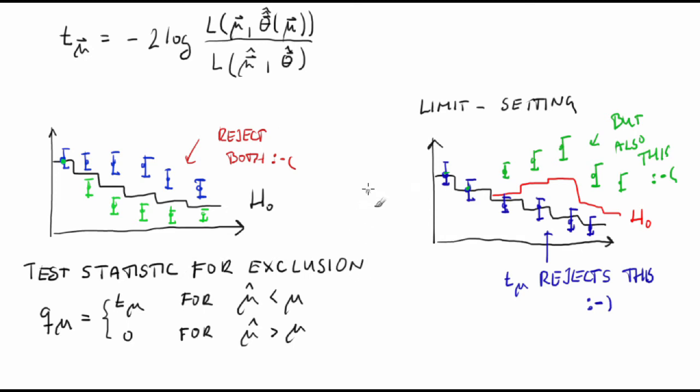Thanks to Mr. Wilkes and his theorem, we know the distribution of this test statistic in the large sample limit. Large sample means that there are at least about 5 events in each bin of our histogram. Now the distribution. F of Q sub mu given mu is approximately equal to one-half of the delta function of Q sub mu plus one-half of the chi-square distribution with one degree of freedom of Q sub mu.